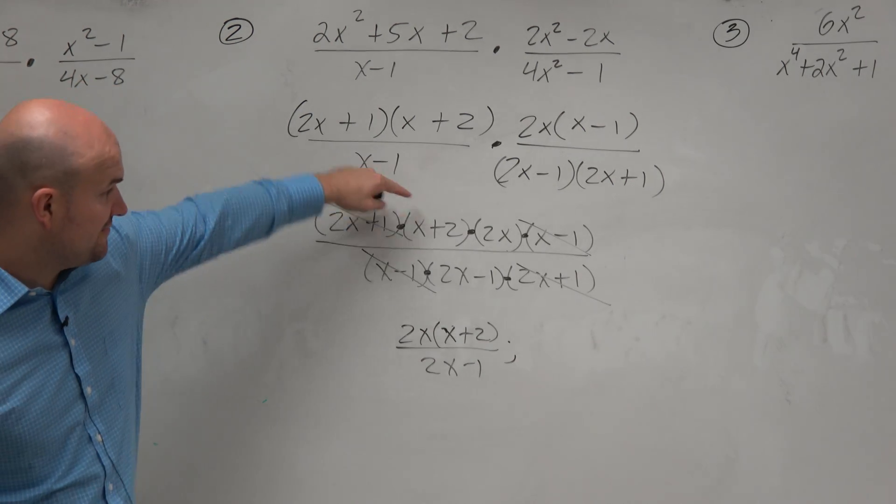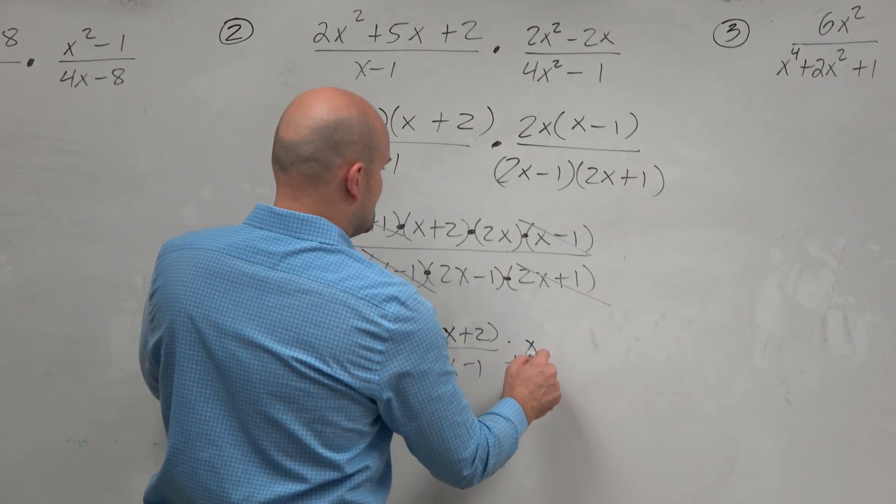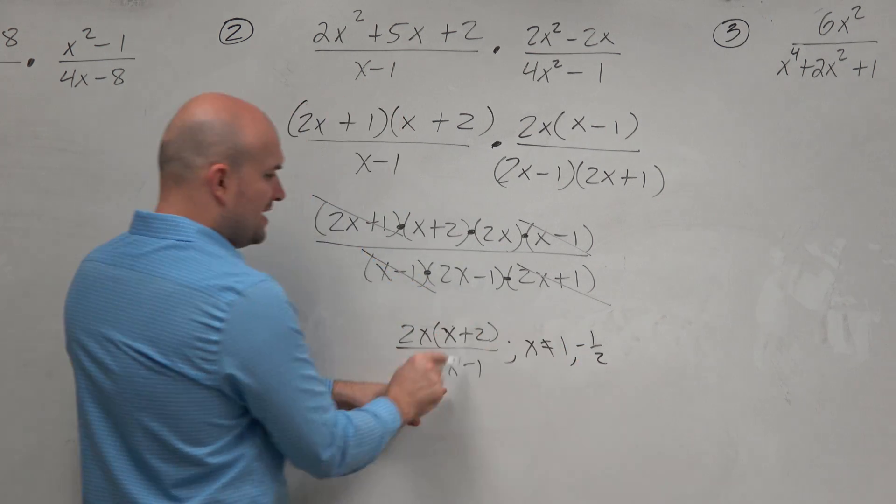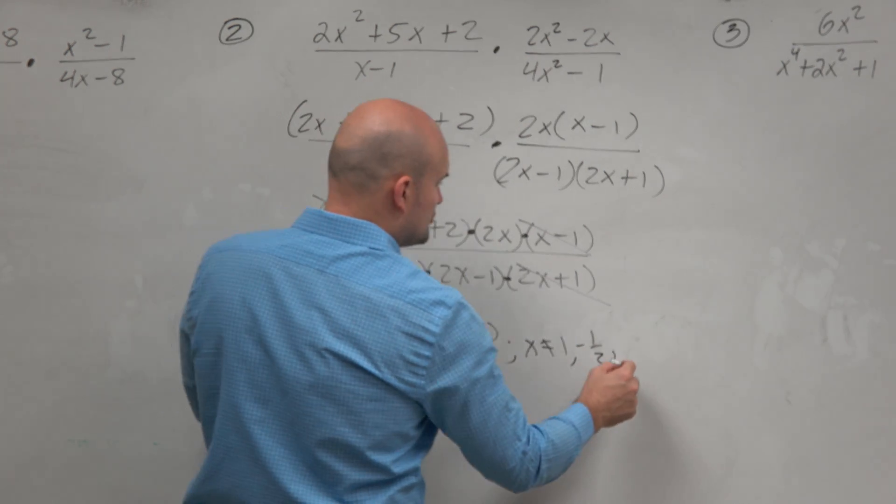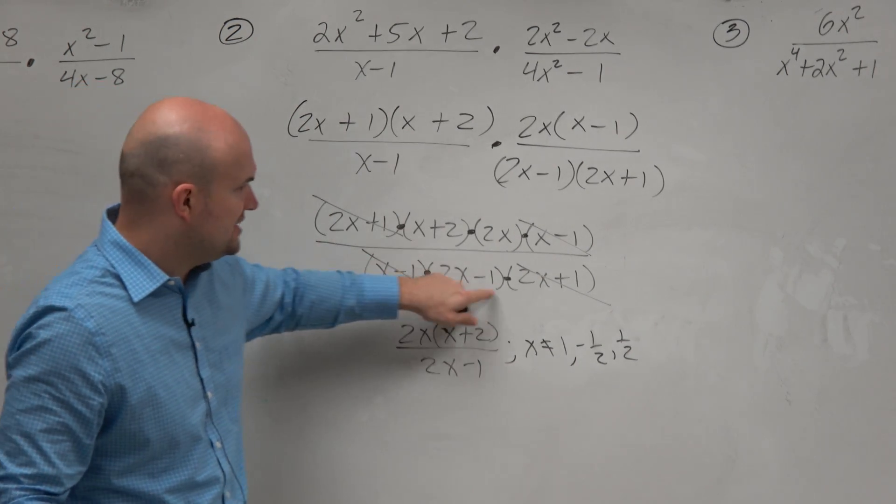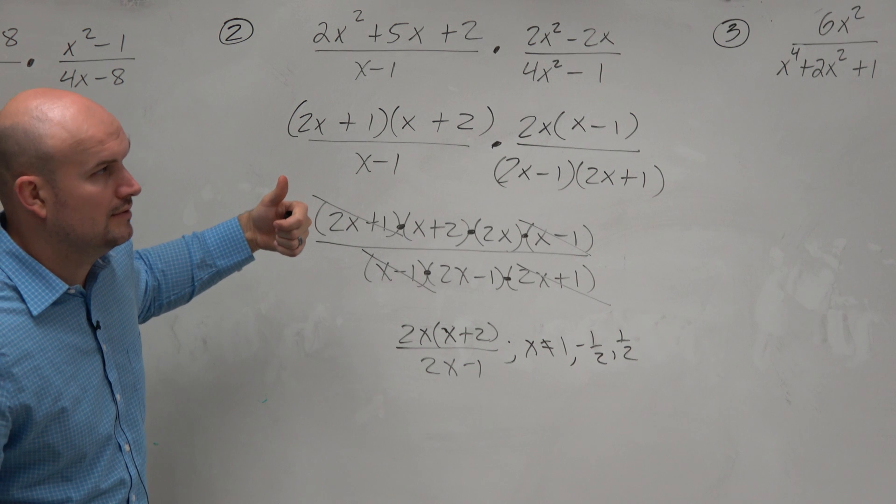Where my function is not defined. Going back up here, not here, but going back up here, where x cannot equal 1, negative one-half, and then still a restriction, which would be positive one-half. If you're not getting those answers, set each factor equal to zero, because those are the values that would make it equal to zero.